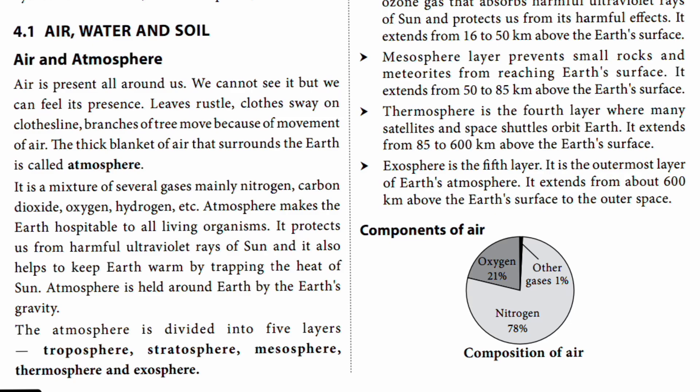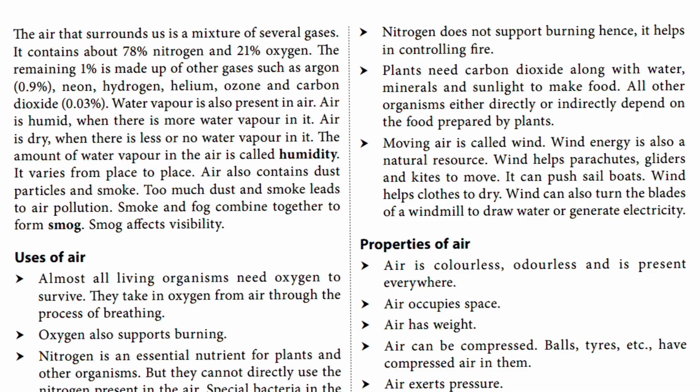All the other gases together make up about 1%, including argon at 0.9%, and neon, hydrogen, helium, ozone, and carbon dioxide at 0.03%. Water vapor is also present in the air. The air is humid when there is more water vapor, and dry when there is less or no water vapor. The amount of water vapor in the air is called humidity, and it varies from one place to another.